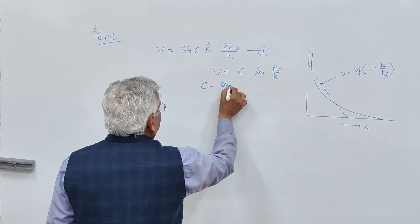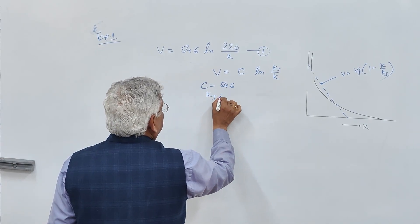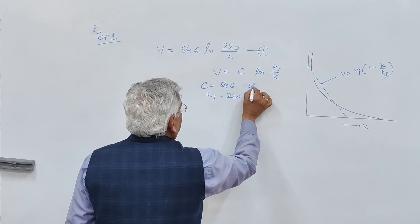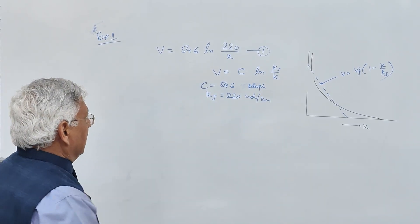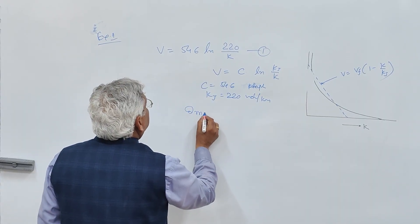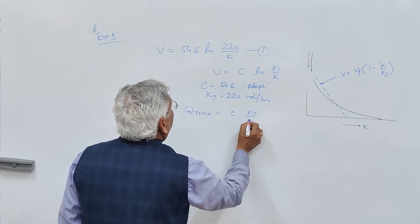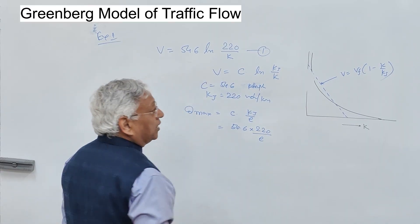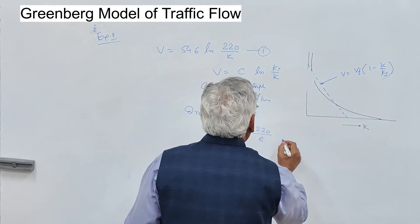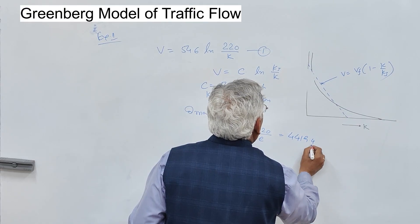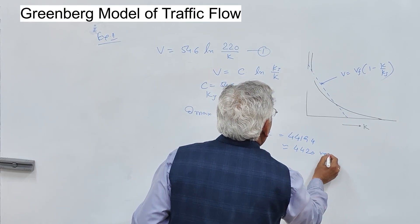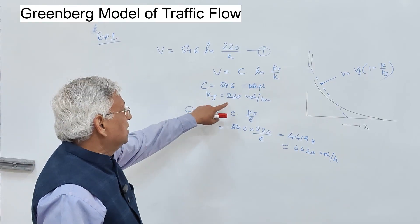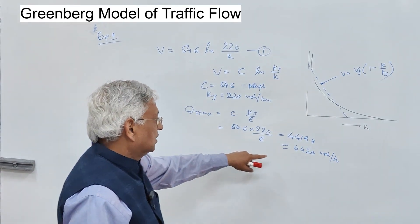C is 54.6 kilometres per hour and jam density kj is 220 vehicles per kilometre. Maximum flow q_max equals c times kj divided by e, which is 54.6 times 220 divided by 2.718, giving approximately 4420 vehicles per hour. That is the capacity of this section of road.